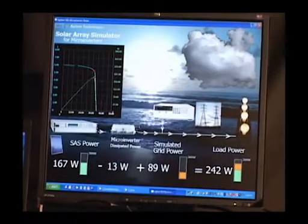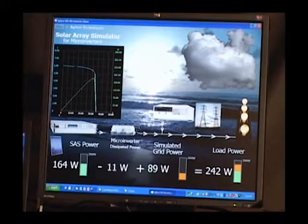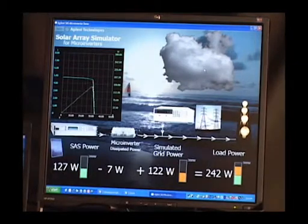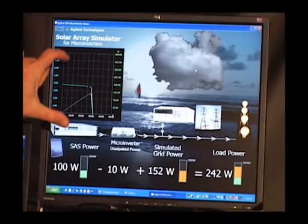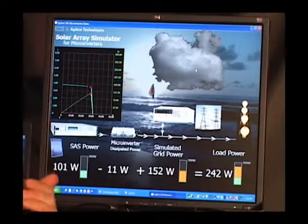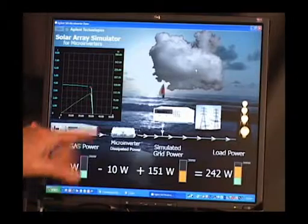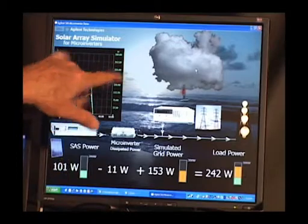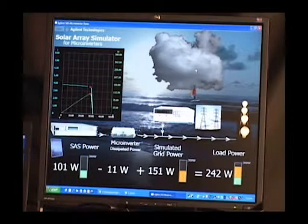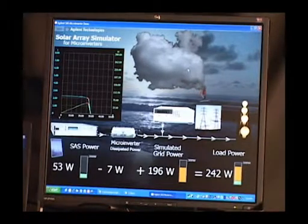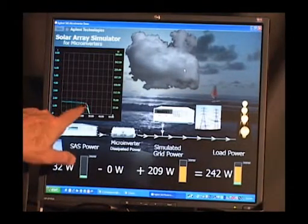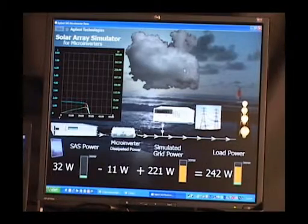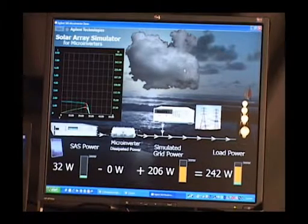Let me show you what would happen if we get some more cloud cover. I can actually, with my demonstration software here, move the cloud in front of the sun. What that does is it moves the IV curve down and it reduces the amount of power that would be available from a real solar panel. In this case we're simulating that with the SAS and we're changing the IV curve. As I move that cloud I'm actually programming the IV curve down on the SAS and the red crosshairs always end up right at that maximum power point because that microinverter is doing a really good job of regulating right at that maximum power point.